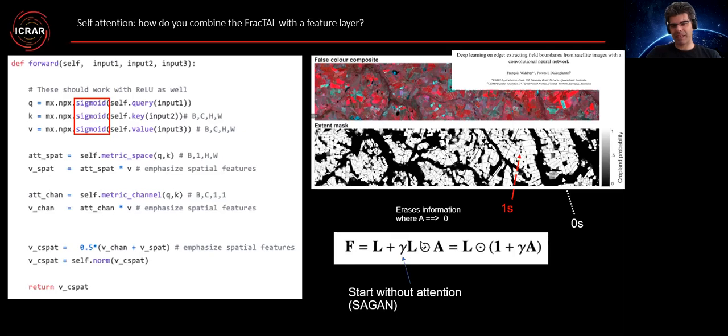So what we did is that we multiply element-wise with the attention layer, then we add that to the original layer with a scaling factor starting from zero. This is a trainable parameter. A similar fashion is done with SAGAN. We found that this works really well.